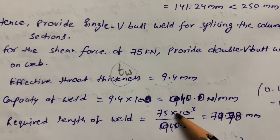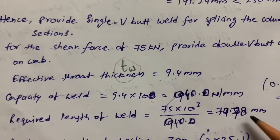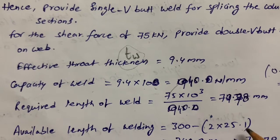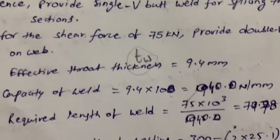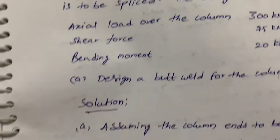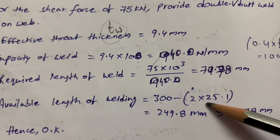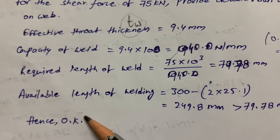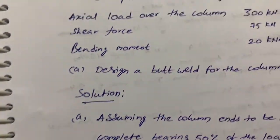The required weld length for shear is: 75 × 10³ / 940 = 79.78 mm. The available weld length is: 300 − 2 × 25.1 = 249.8 mm, where 300 is the section depth of ISHB 300 and 25.1 is the h2 value from steel tables for the two flanges. Since 249.8 mm > 79.78 mm, it is okay. This completes the column splice design using welding.